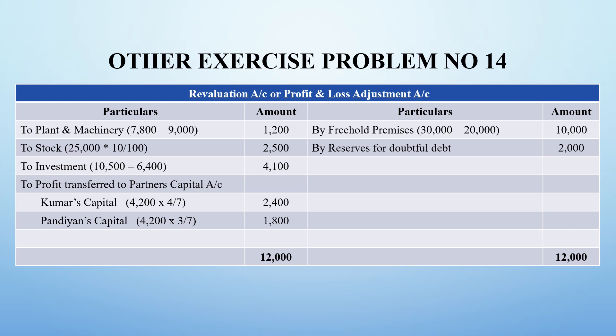On ₹25,000 stock, 10% discount gives ₹2,500, so ₹2,500 goes to the debit side. Then the investment: since Kumar has taken it over at the market value of ₹6,400 against the book value of ₹10,500, the difference of ₹4,200 is the loss on revaluation for the investment.